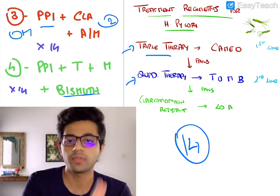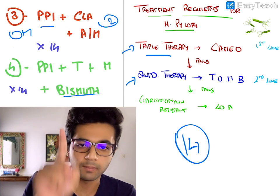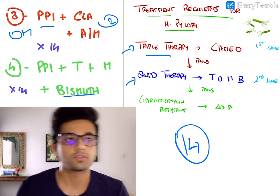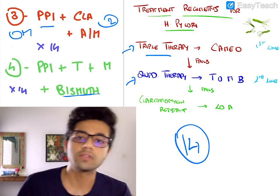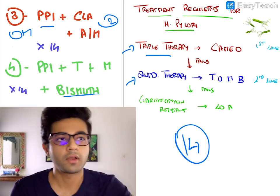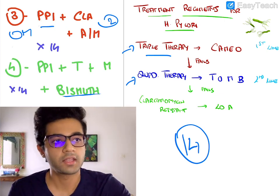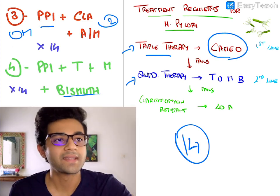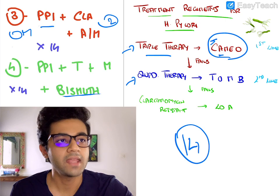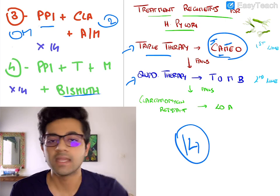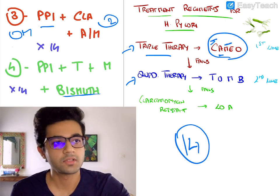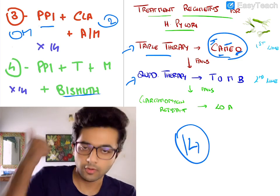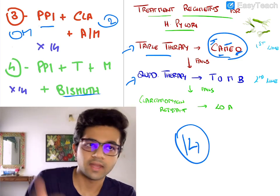The two antibiotics include clarithromycin and either amoxicillin or metronidazole — either one, not both. So clarithromycin is compulsory, and either amoxicillin or metronidazole. Triple therapy is usually a first-line therapy for H. pylori eradication, and it can be remembered using the mnemonic CAMEO: C for clarithromycin, A for amoxicillin, M and E together for metronidazole, and O for omeprazole.